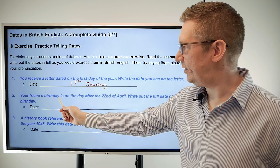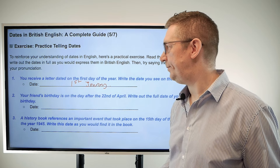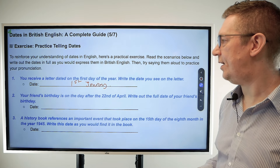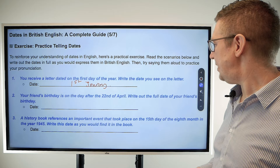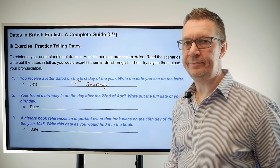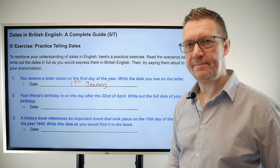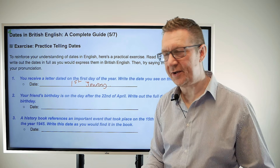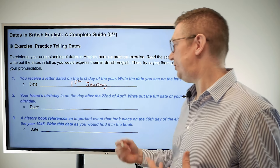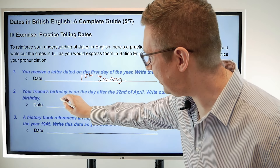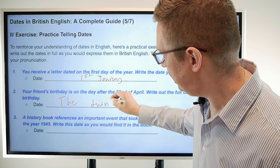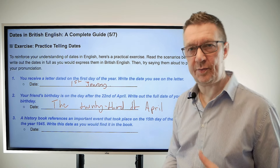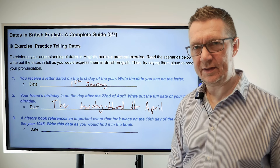Number two: your friend's birthday is on the day after the 22nd of April — write out the full date. The answer is the 23rd of April. Written, it looks like: '23rd of April.' Excellent — I think you've got the hang of it.